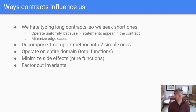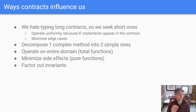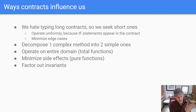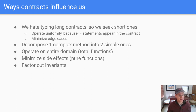There are several different ways that contracts influence us and cause us to want to change our designs. For example, we hate typing long contracts and we seek short ones. We don't want our contracts to feel like a convoluted legal document. Just the act of trying to find that short, sweet contract causes us to do a couple of things: first, we operate uniformly — every time we have to add an if statement, we're going to see that in the contract. And second, we minimize the number of edge cases. If we can find a way to say, for any values you pass in we consistently do the same thing, that's a whole lot easier than listing out special cases like zero, or 10, or 10 and 15.